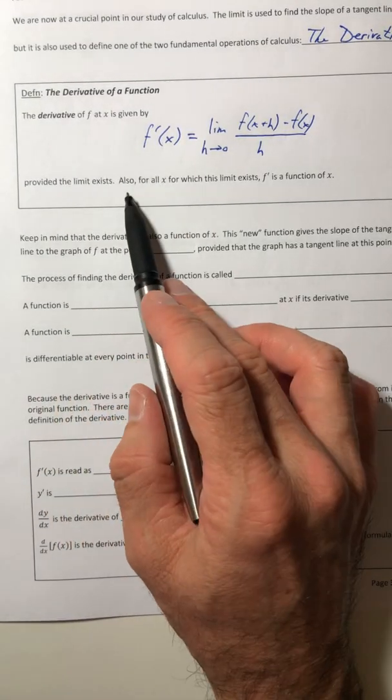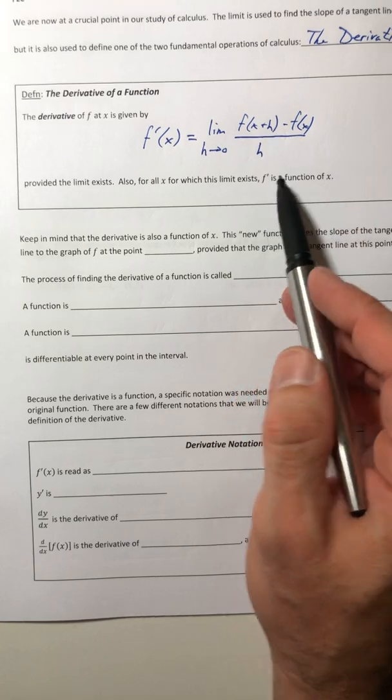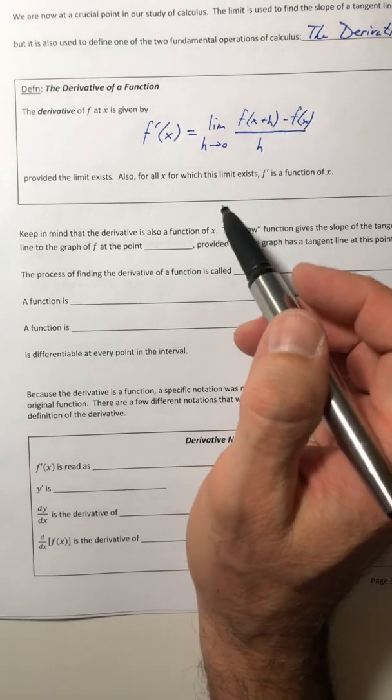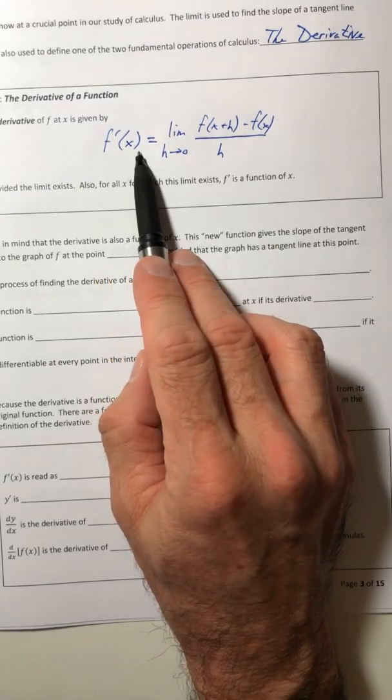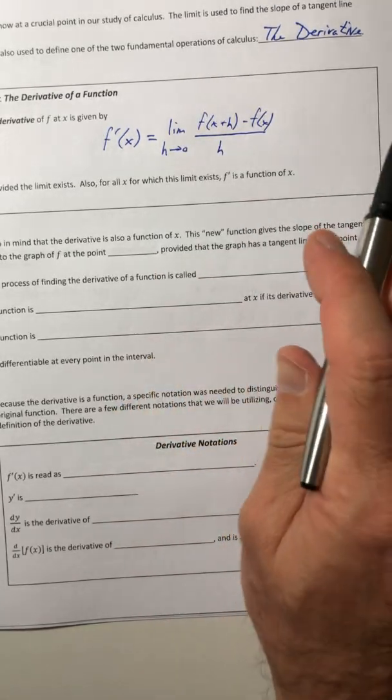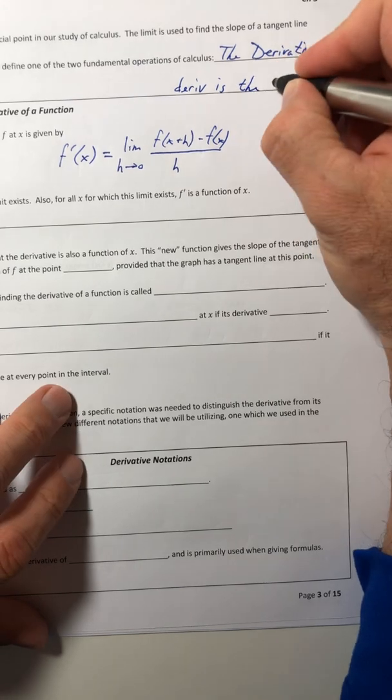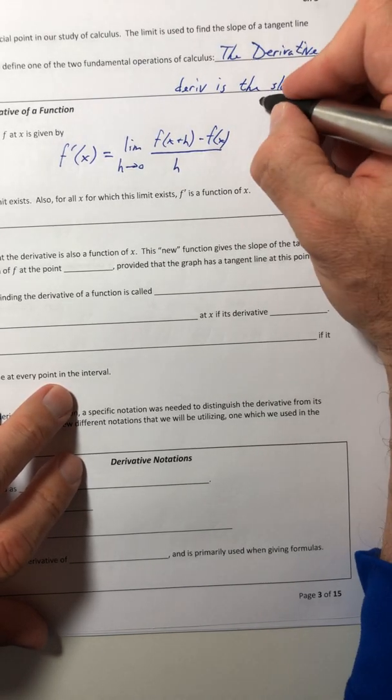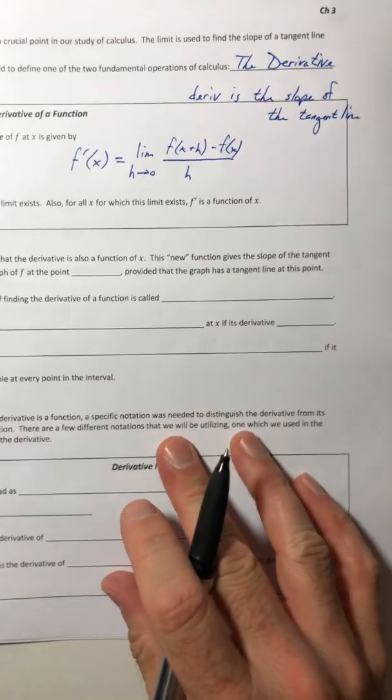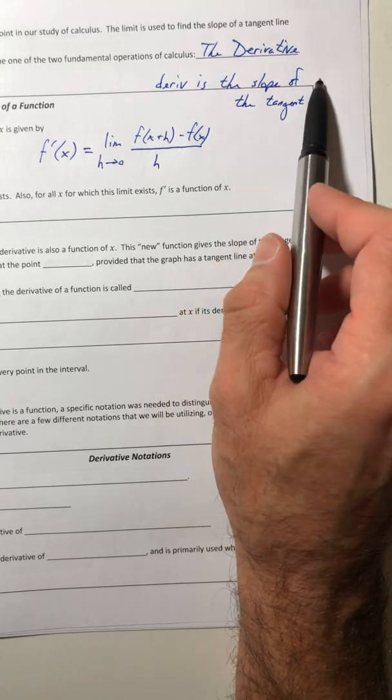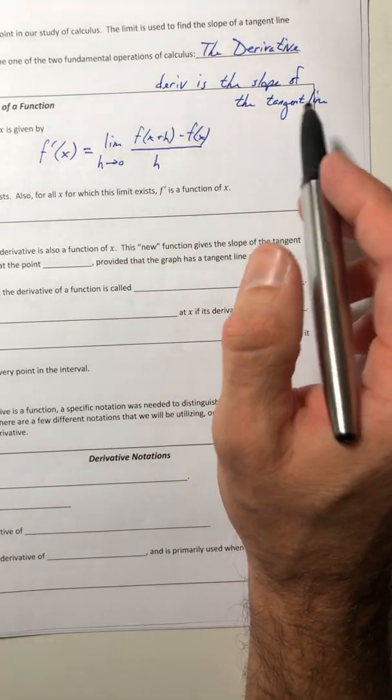Provided this limit exists. So also, for all x for which this limit exists, or for wherever this thing exists, that f prime is a function of x. So when we do this, you're going to get a function out of it. Okay, so let's look at what we just wrote. The derivative, f prime, is this. So in other words, the derivative is the slope of the tangent line. So when I ask you to find the slope of the tangent line, they're also asking you to find the derivative. If they ask you to find the derivative, they're also asking you to pretty much get the slope of the tangent line. So they are interchangeable phrases.